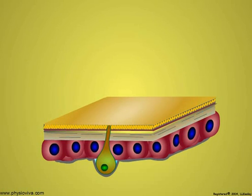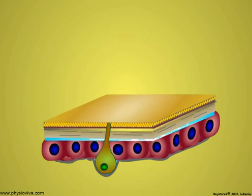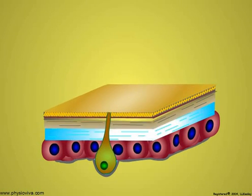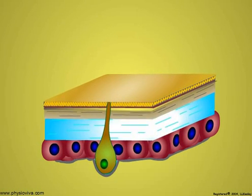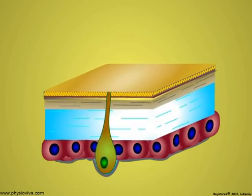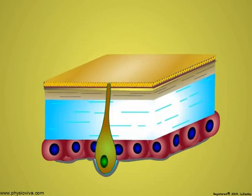During the time between the molts, new endocuticle is deposited continuously. And the cycle starts over at the next molt.